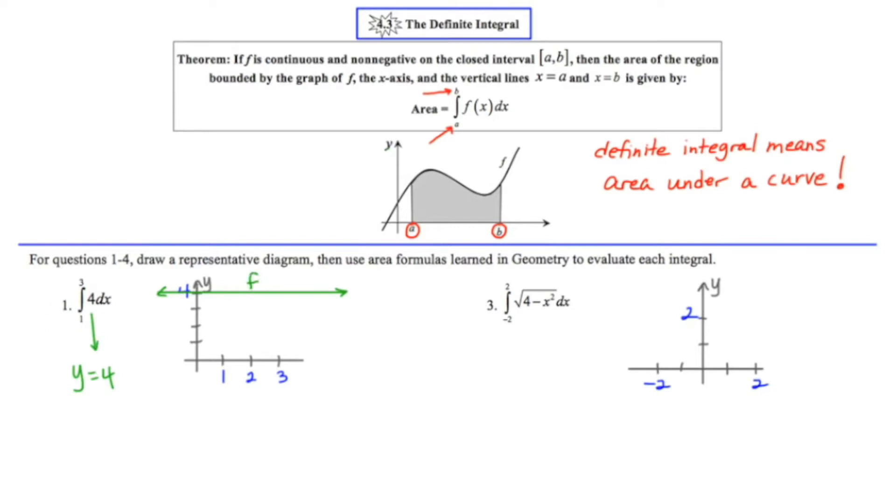Now this lower limit here, one, tells us our start point and I'm going to draw a vertical line through one. This upper limit gives us the second vertical line at x equals three. And then I also use the x-axis as one of the boundaries. So what this definite integral really means is finding the area under this curve f bounded by these vertical lines x equals one, x equals three, and the x-axis.